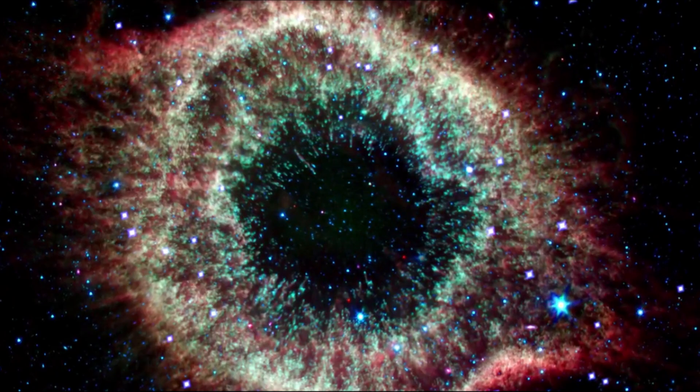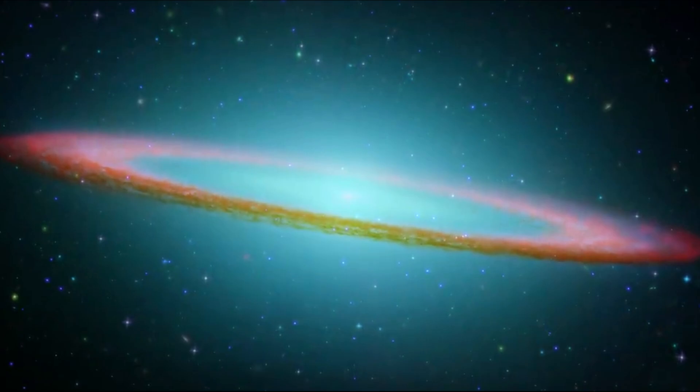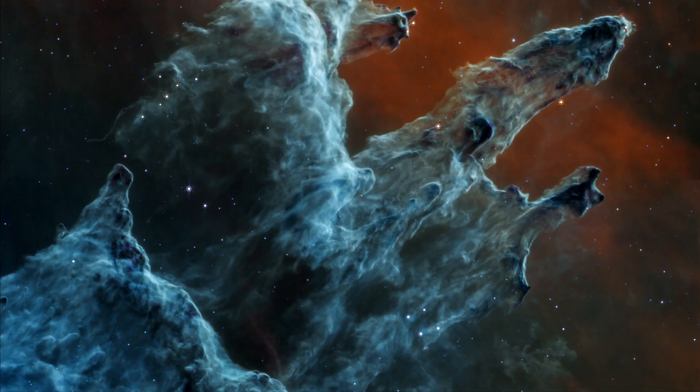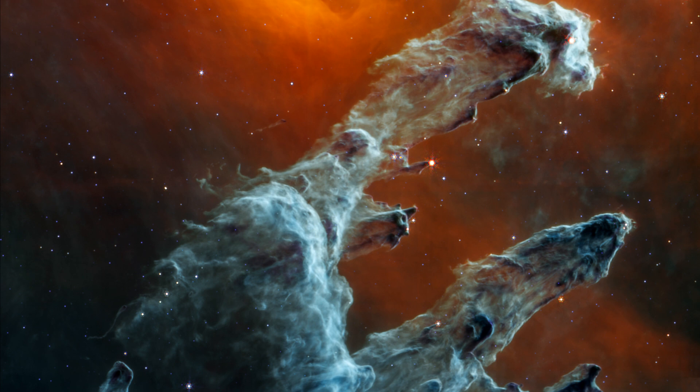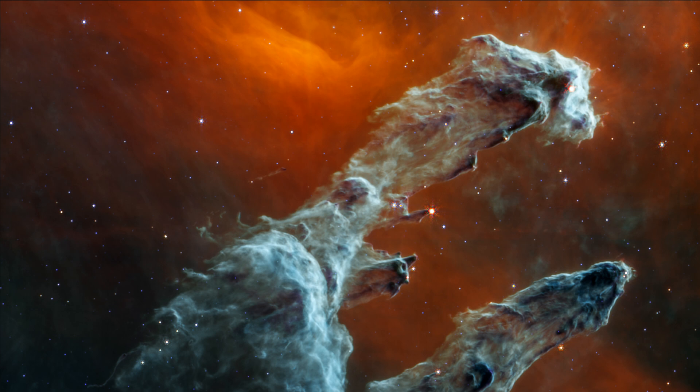This is also unmistakable throughout the background. The densest areas of dust are the darkest shades of gray. The red region toward the top, which forms an uncanny V, is where the dust is diffused and cooler. Notice that no background galaxies make an appearance. The interstellar medium in the densest part of the Milky Way's disk is too swollen with gas and dust to allow their distant light to penetrate.